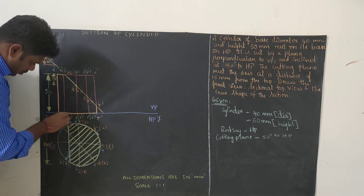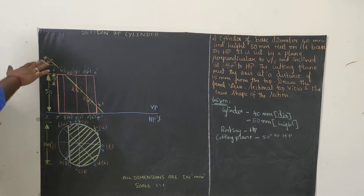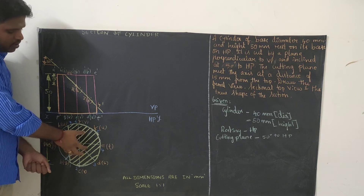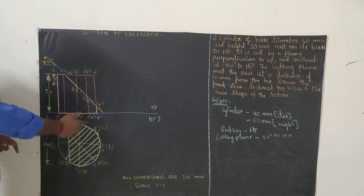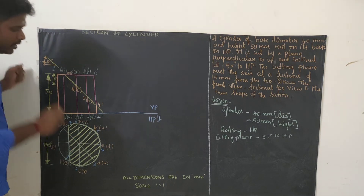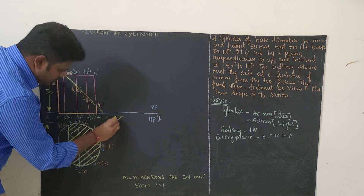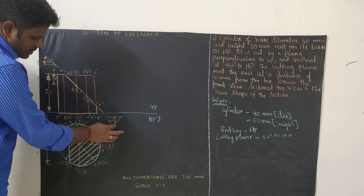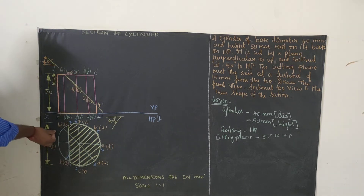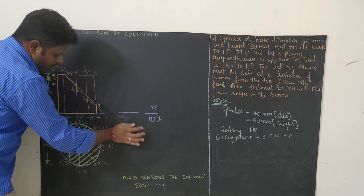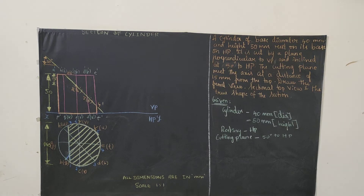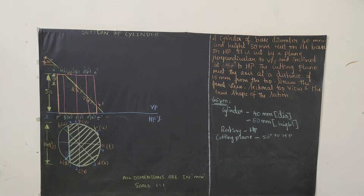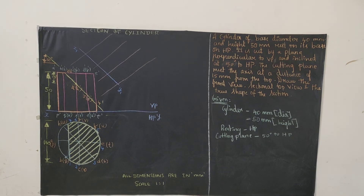The upper portion will be cut off and the remaining portion is what we have. Darken the remaining portion. Then do hatching on the sectional top view — hatching should be done at 45 degrees with equal spacing. Draw one reference line at 45 degrees and draw all lines parallel to it with equal spacing, then erase the reference line.